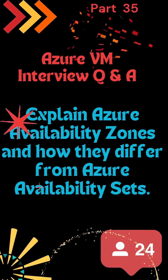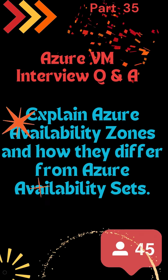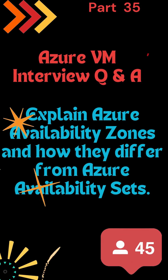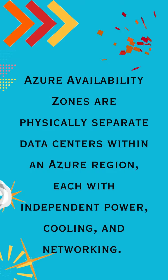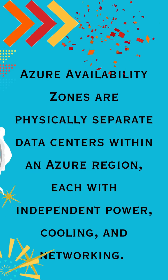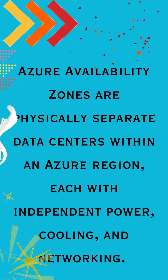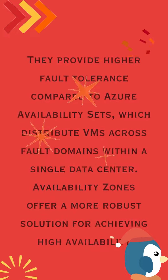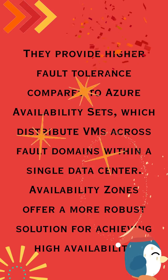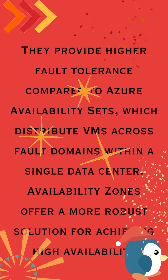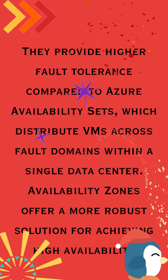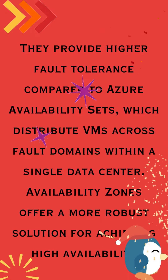Explain Azure Availability Zones and how they differ from Azure Availability Sets. Azure Availability Zones are physically separate data centers within an Azure region, each with independent power, cooling, and networking. They provide higher fault tolerance compared to Azure Availability Sets, which distribute VMs across fault domains within a single data center. Availability Zones offer a more robust solution for achieving high availability.